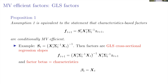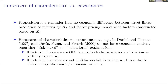This underlines an important aspect: there is no real economic difference between direct linear predictions of returns by X and a factor pricing model with factors constructed based on X. If some characteristics predict returns, there always exists an asset pricing model with factors constructed as described where risk exposures — betas — exactly explain all expected returns.